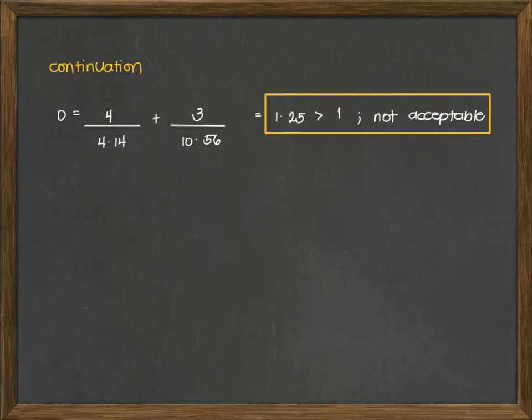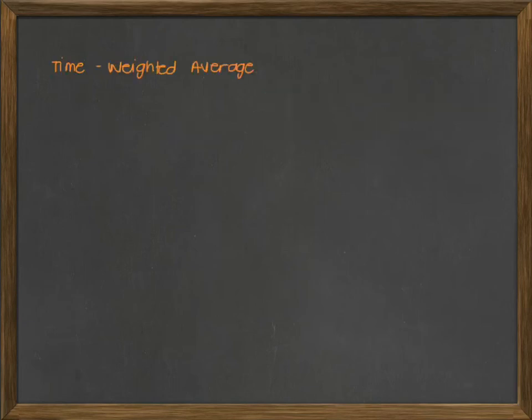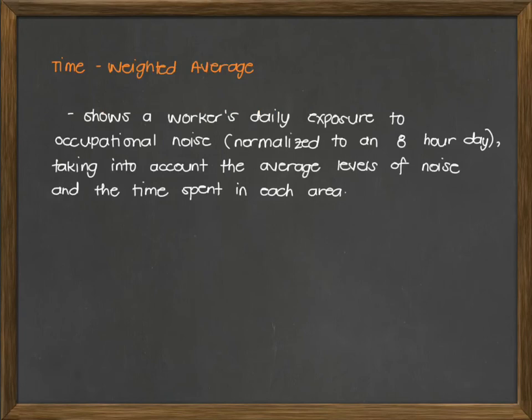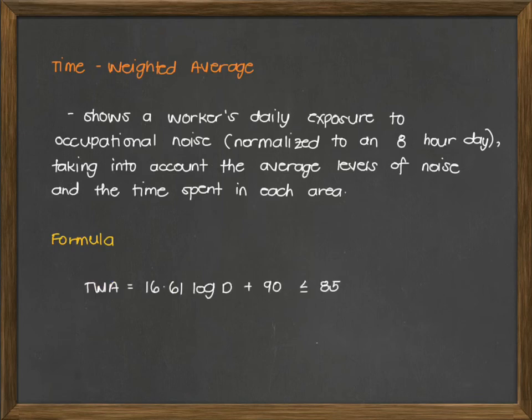When computing the noise dose, your value should be less than or equal to 1 — or if multiplied by 100, less than or equal to 100. The next topic is the time-weighted average (TWA). It shows a worker's daily exposure to occupational noise, normalized to an 8-hour day, taking into account the average levels of noise and time spent in each area. The formula is: TWA = 16.61 log(D) + 90, and this should be less than or equal to 85.